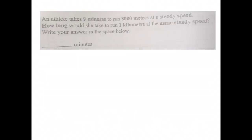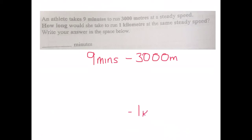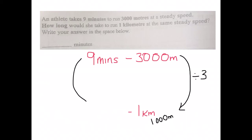An athlete takes nine minutes to run 3000 metres at a steady speed. How long would she take to run one kilometre at the same steady speed? Write your answer in the space below. In nine minutes the athlete can run 3000 metres. One kilometre is just 1000 metres, so you've divided by three. If we divide the distance by three, we must do the same to the time: nine minutes divided by three is three minutes. And that's our answer.